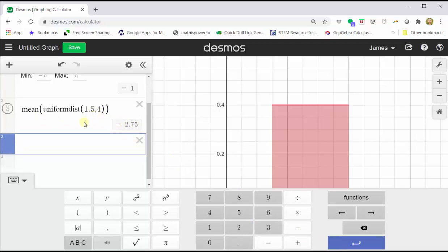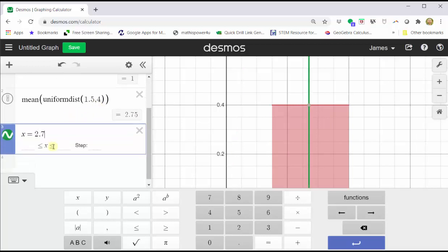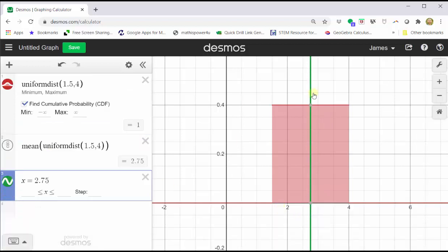which would be the average repair time in hours. To show where this fits in the distribution, in cell three, let's enter x equals 2.75. Close the desmos keypad. Notice how that's right in the middle because we have a uniform distribution.